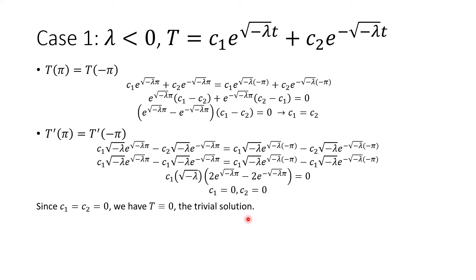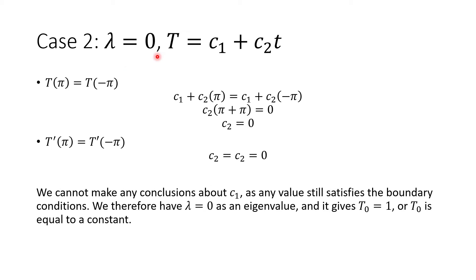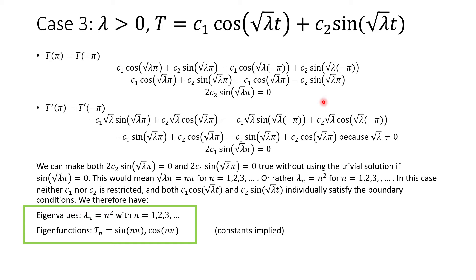For case two, lambda equals zero: T(pi) equals T(-pi), and substituting into our equation the c1 terms cancel and we get c2 times (pi + pi) equals zero, so c2 equals zero. Taking the derivative eliminates the t term, and we're left with c2 on both sides - but we already know c2 equals zero. We haven't found any constraint on c1, so c1 is a free solution. Therefore when lambda equals zero, our solution is just one - or some constant.